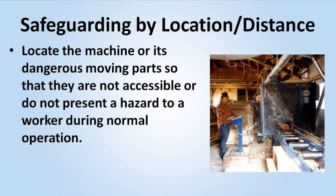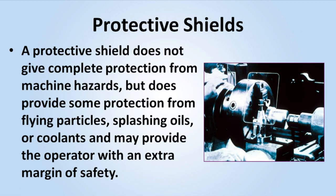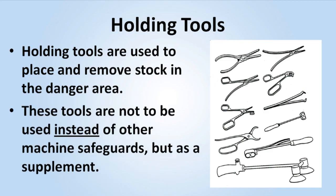Locate the machine or its dangerous moving parts so that they are not accessible or do not present a hazard to a worker during normal operation. Always maintain a safe distance from the danger area. A protective shield does not give complete protection from machine hazards but does provide some protection from flying particles, splashing oils or coolants, and may provide the operator with an extra margin of safety. Holding tools are used to place and remove stock in the danger area and are not to be used instead of other machine safeguards, but as a supplement.